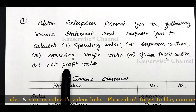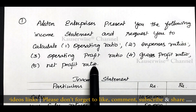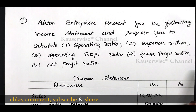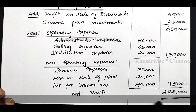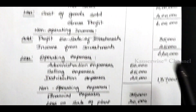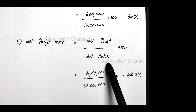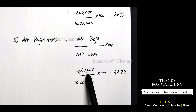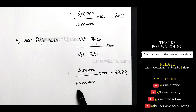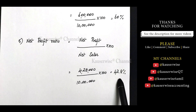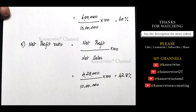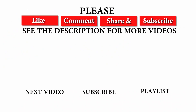The last one is net profit ratio. The formula is net profit divided by net sales into 100. Net profit from the income statement is 4 lakh 28,000 divided by net sales of 10 lakhs into 100 = 42.8%. This is the way to calculate profitability ratios based on net sales. In the next video, we are going to see the continuation of profitability ratio calculation. You can find the links in the description box. Hope you like this video — please like, comment, subscribe and share with your friends. Thank you.